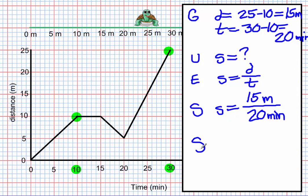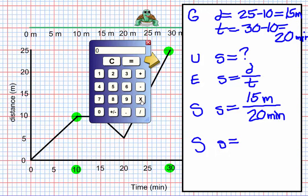Alright, now let's solve. So if we punch these into our calculator, 15 divided by 20, you'll see that we get .75. So our answer is .75 meters per minute.